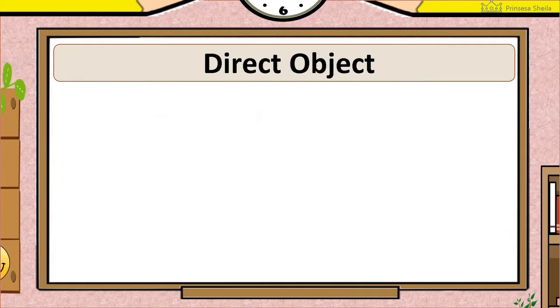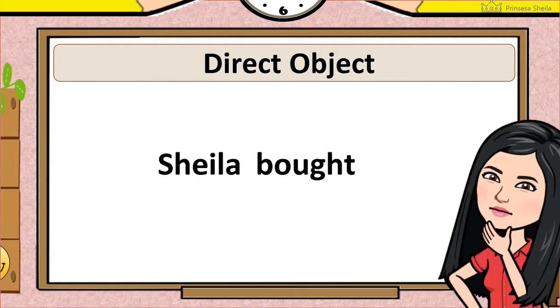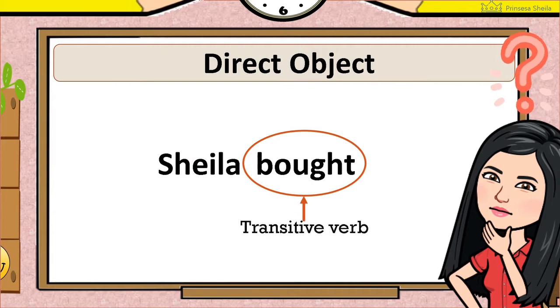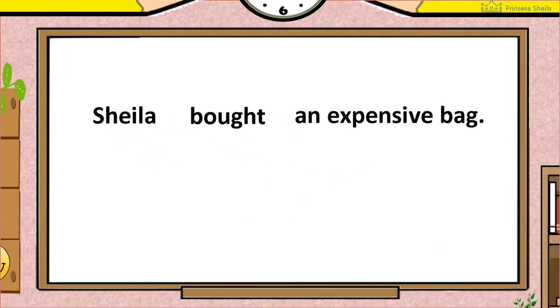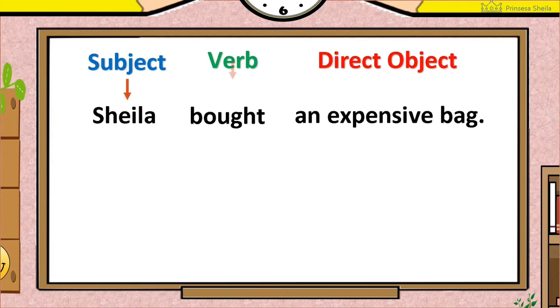Take a look at this. Sheila bought. Sheila bought what? Is the thought complete? No. Bought is a transitive verb. To make it complete, let's add a direct object. Sheila bought an expensive bag.